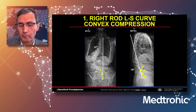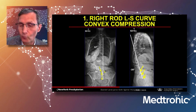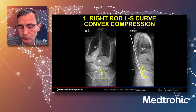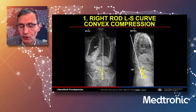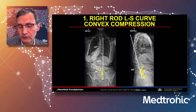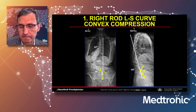Now applying instrumentation and rods: the first rod applied is the right-sided rod, connecting distally into the S2AI screw, then capturing S1, L6, L5, and starting compression down on the right side. This creates a little lumbosacral lordosis and also starts to horizontalize L4, L5, and L6.